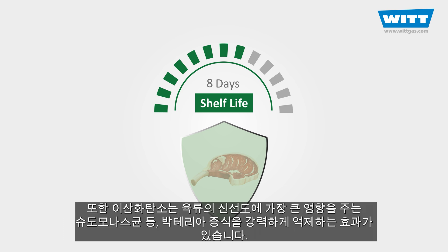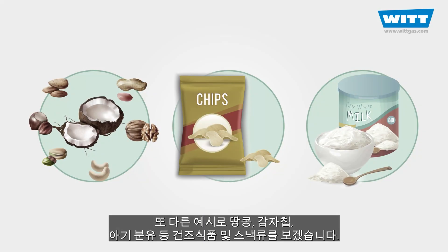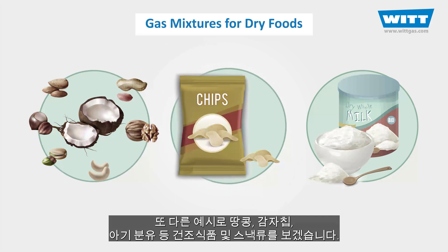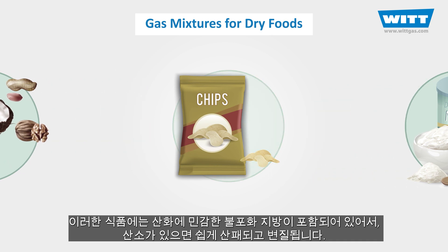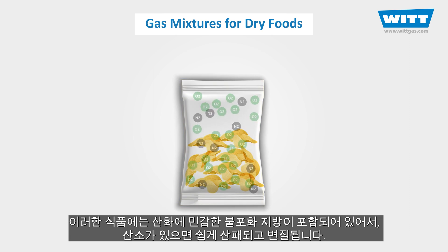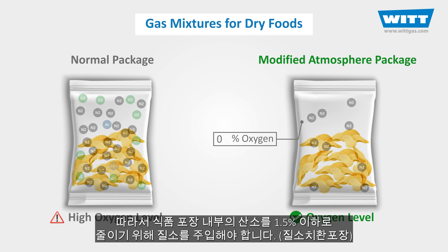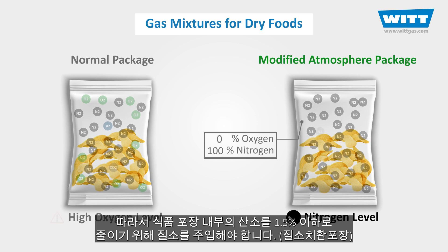Carbon dioxide has a strong inhibiting effect on the growth of bacteria, of which Pseudomonas presents the greatest problem for fresh meat. As another example, consider dry foods and snacks like peanuts, potato chips, and baby milk powder. These foods contain unsaturated fats that make them sensitive to oxidation and rancidity when oxygen is present. So the oxygen amount must be reduced to under 1.5%, and the rest of the air inside the package must be replaced with nitrogen.